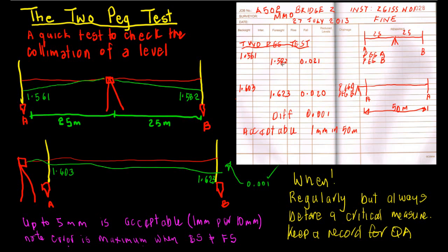At staff B, we look through to staff B, get the reading, note the reading 1.582, write down 1.582, read again 1.582, check that's what we've written down, and then move on.